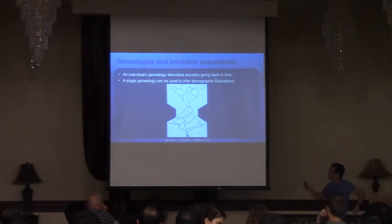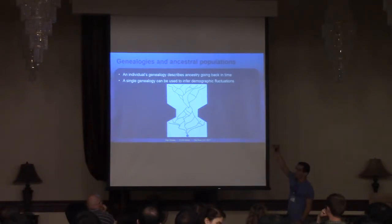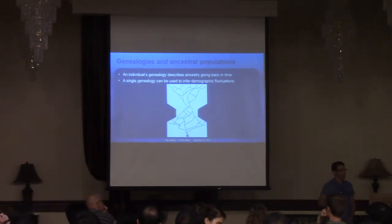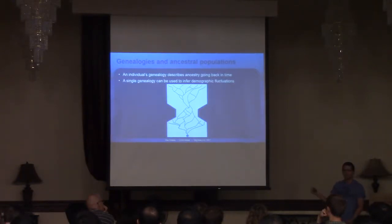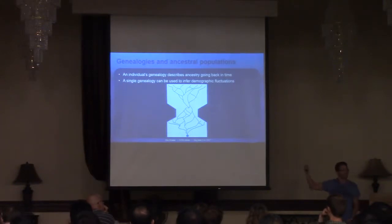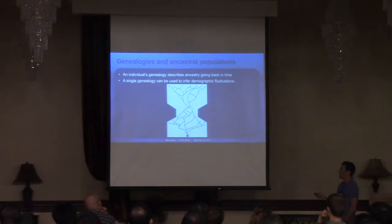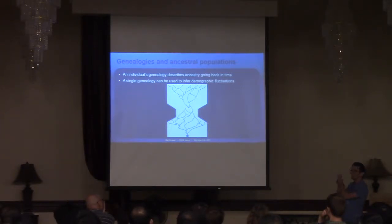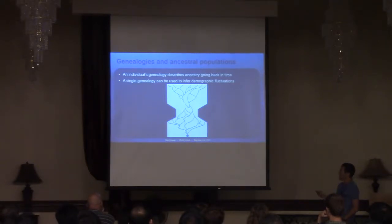If you just trace the coalescent events by their rates, you can get a read-off of population sizes going back in time. A lot of population genetic inference that looks at population sizes actually tries to do this — tracing the rate of coalescent events going back in time — even if you don't see any genealogy drawn explicitly, it's always there in the background.